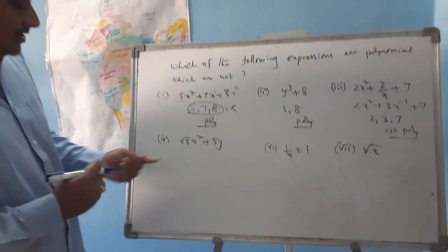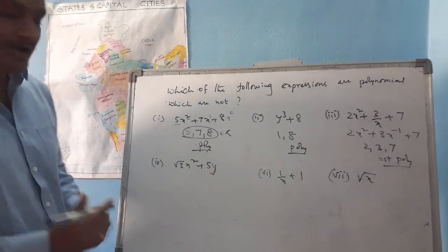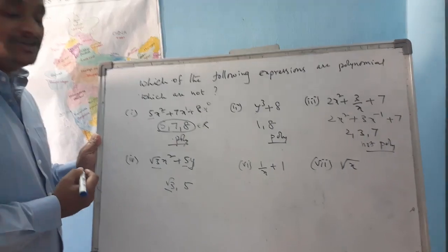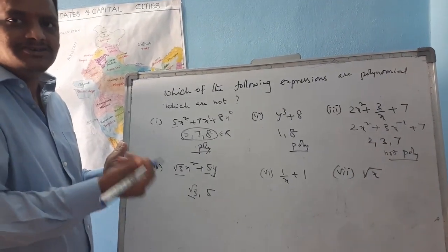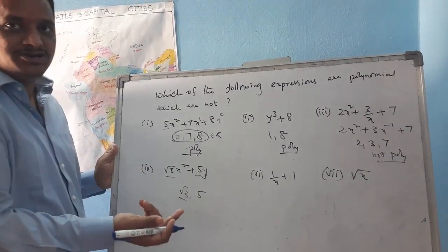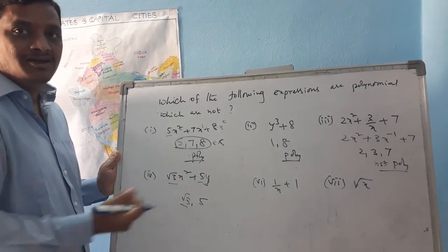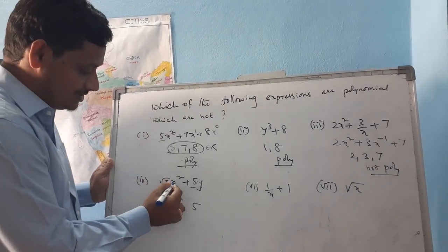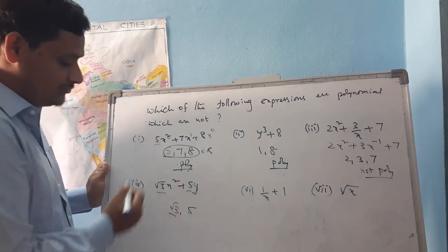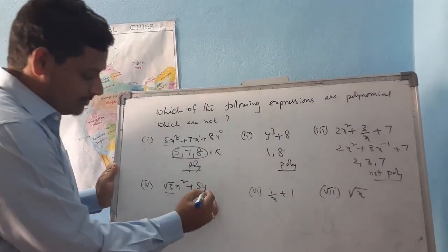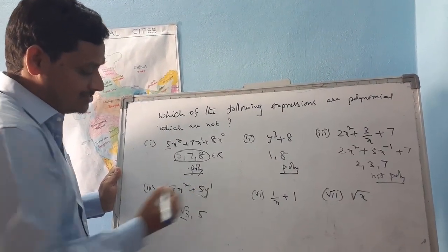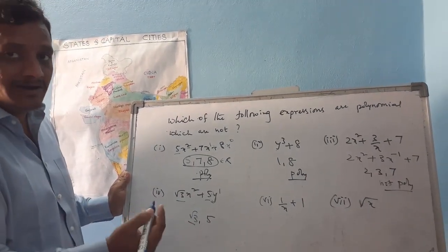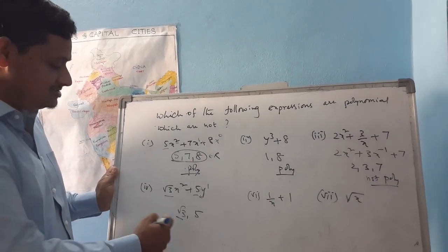For the fourth expression, √3·x² + 5y: the coefficients are √3 and 5. √3 is an irrational number, but irrational numbers are real numbers, and 5 is a rational number, also a real number. The powers of the variables are 2 and 1, both non-negative integers. So this is a polynomial.